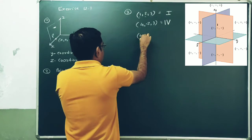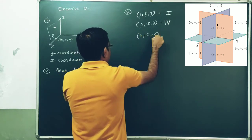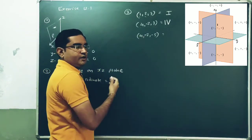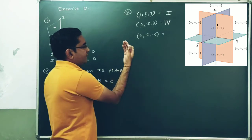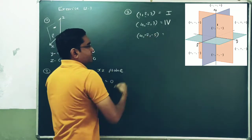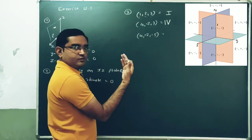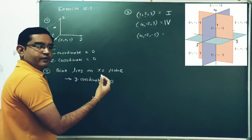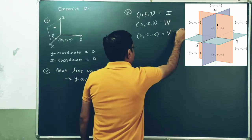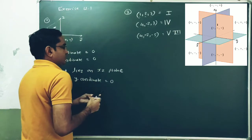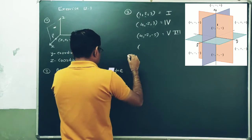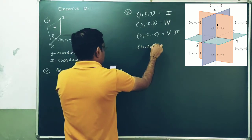Third point: (4, -2, -5). X coordinate is positive — front side. Y coordinate is negative — left side. Z coordinate is negative — downward direction. Front, left, and downward corresponds to octant number 8. So this point lies in the eighth octant.